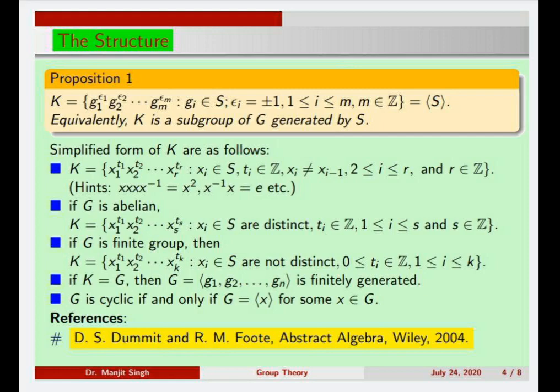Therefore, K is a subgroup of G generated by S, since K is non-empty, closed under multiplication, and every element has an inverse. Also S is contained in K; in fact K is the smallest subgroup generated by S. This form is very useful for defining the commutator subgroup.